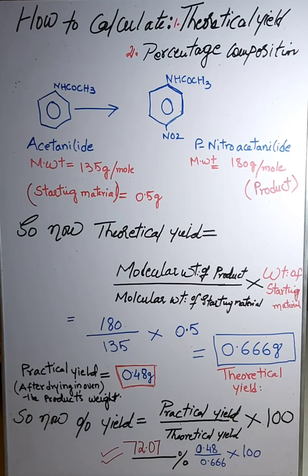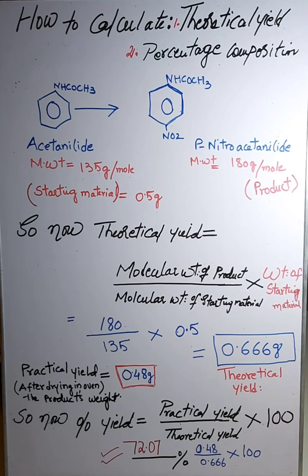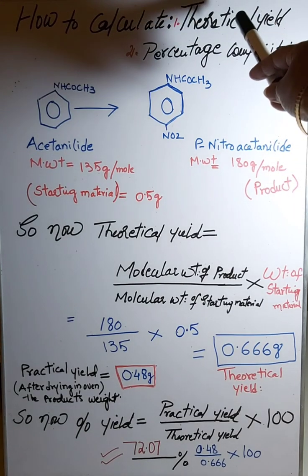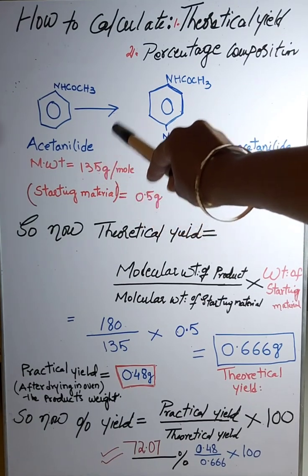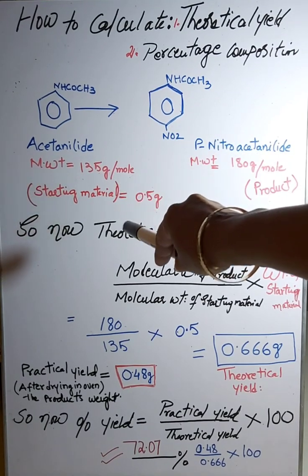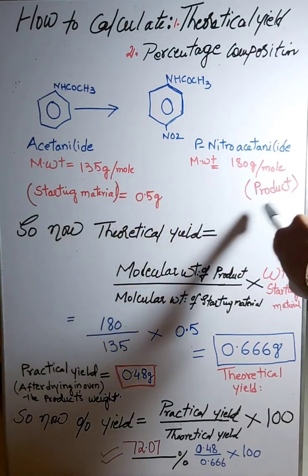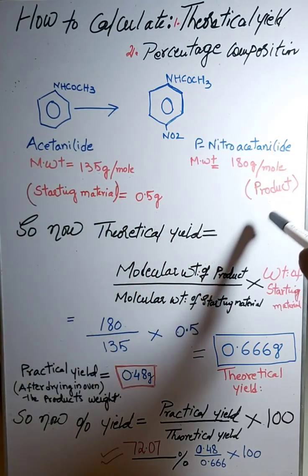Now you are asked to calculate the percentage yield. When you calculate the percentage yield of any compound, you must first calculate the theoretical yield. So today I will explain two things: number one, theoretical yield, and number two, percentage yield. The starting material was acetanilide, with a molecular weight of 135 grams per mole, and the product para nitro acetanilide has a molecular weight of 180 grams per mole.